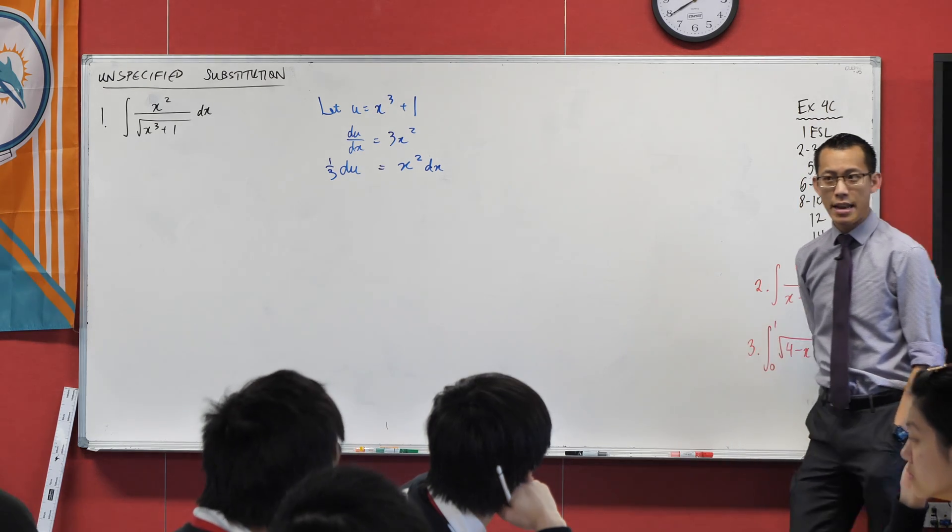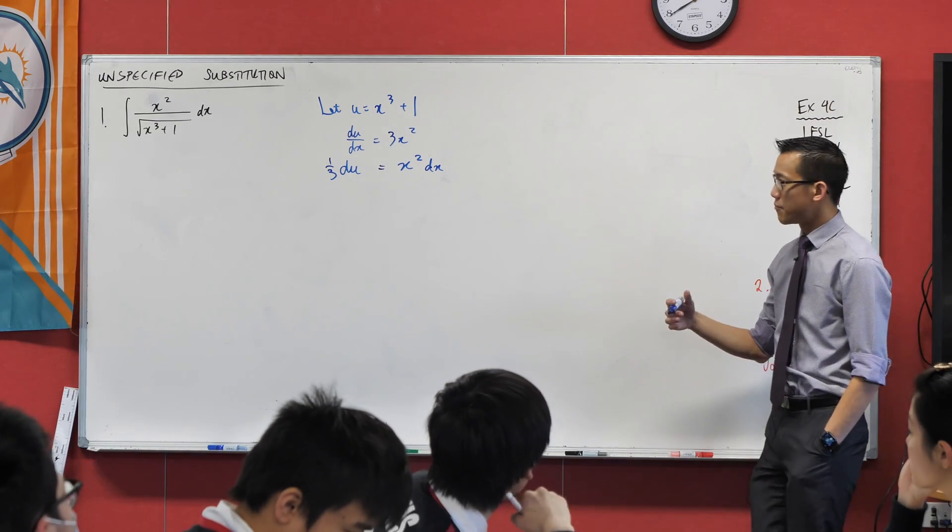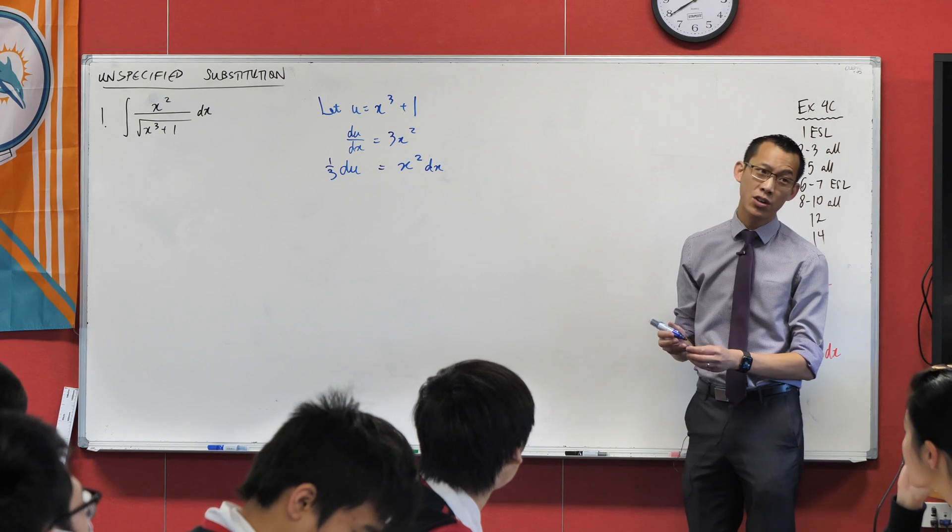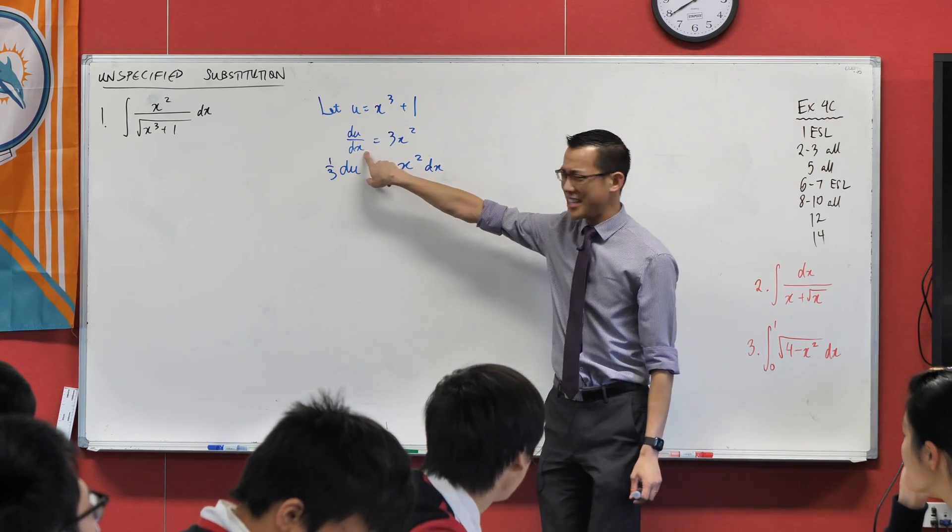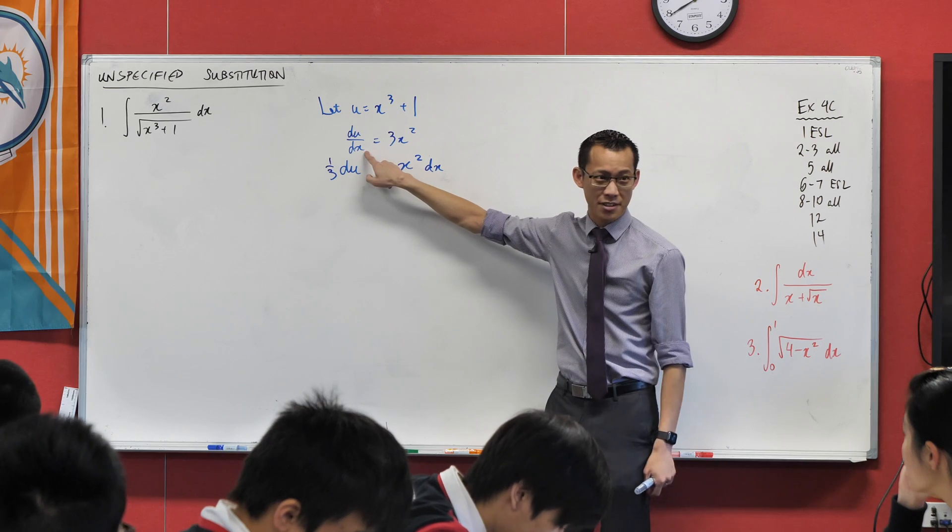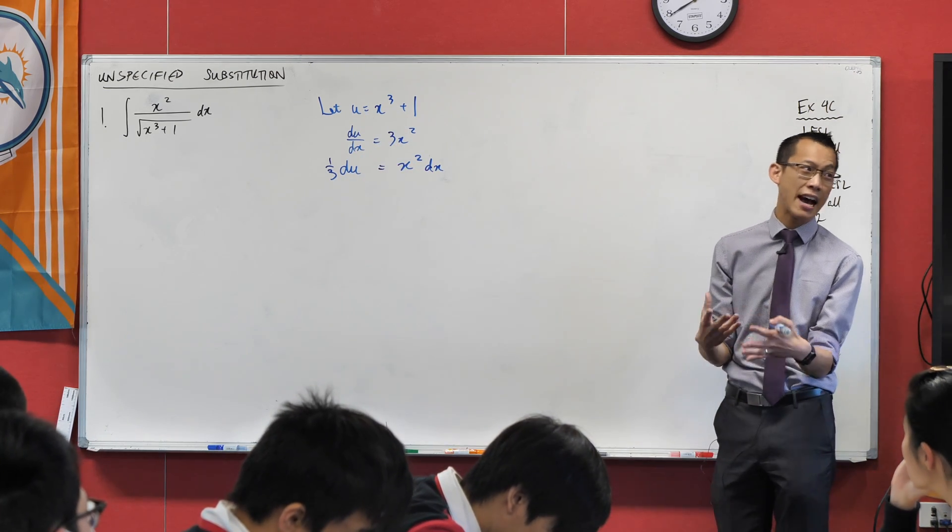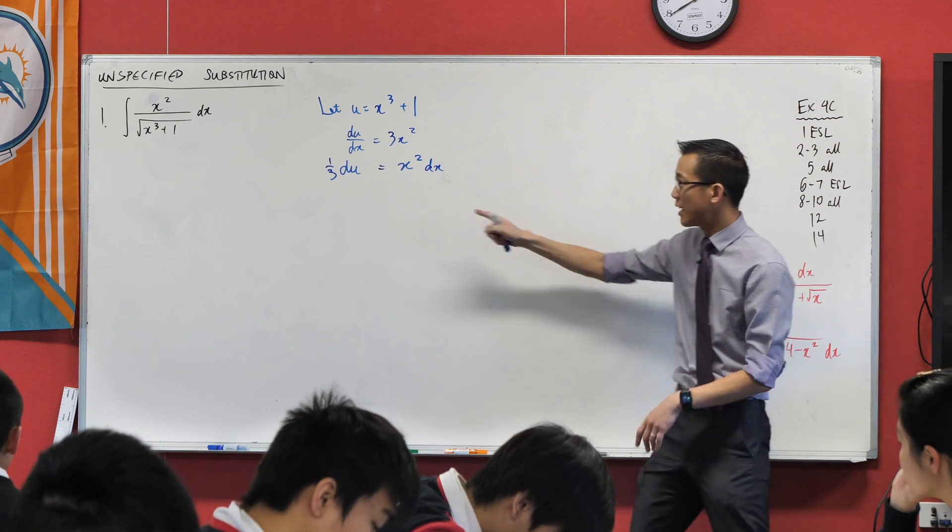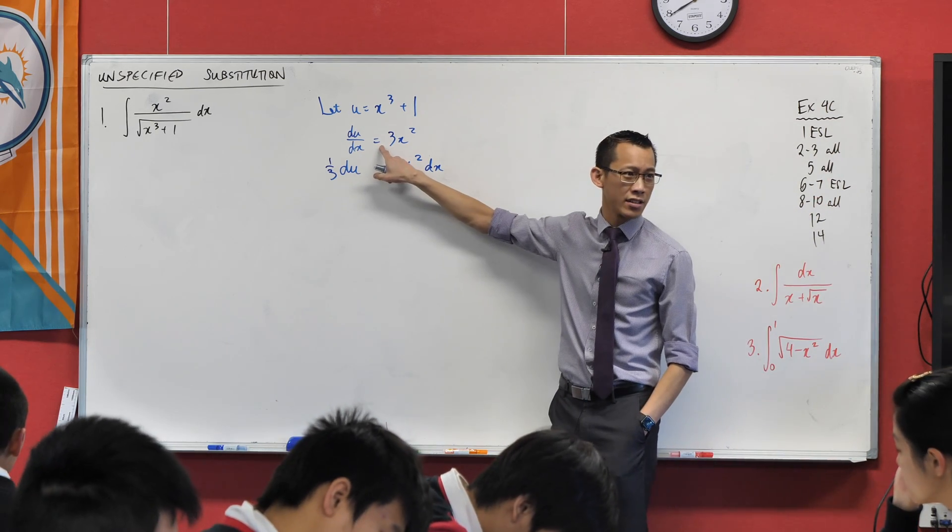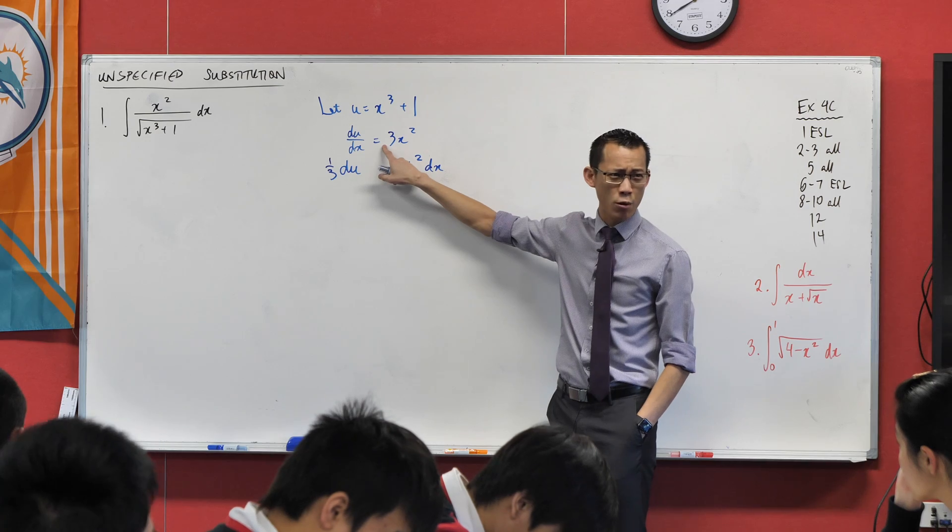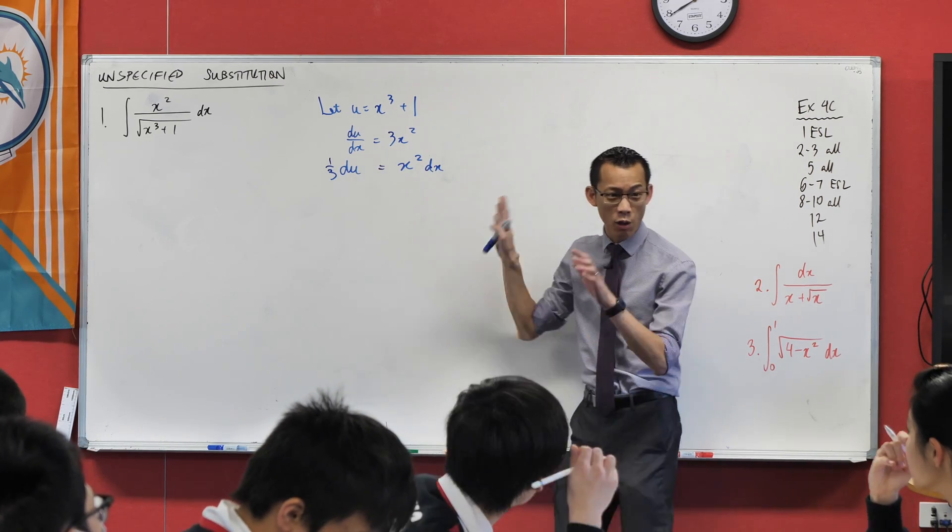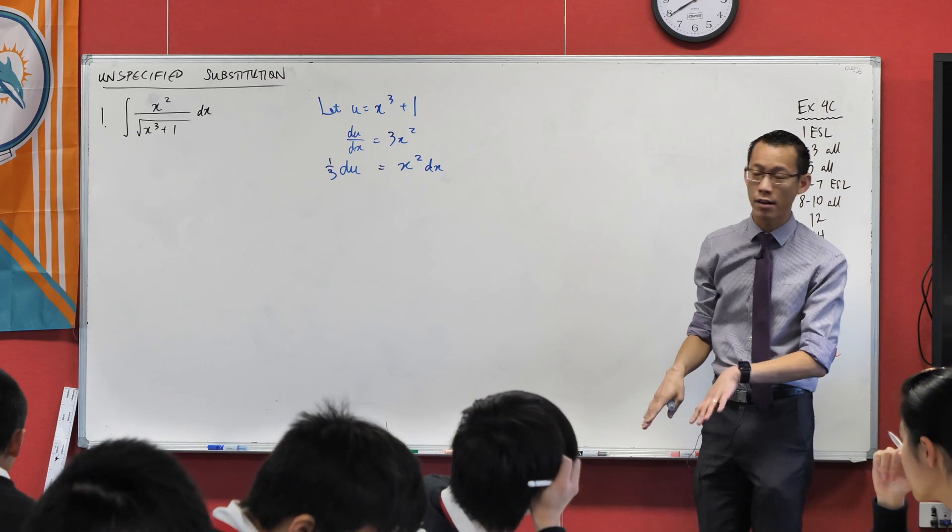Now, I said right out the gate, this is not a perfect way to do things, because in reality this thing here, du on dx, this is not a fraction. We write it as a fraction because that's kind of how chain rule works. But really, if you think back to the beginning of calculus, there's all kind of weird limiting processes and dividing by zero business. There's a lot of stuff under the hood that's going on here.